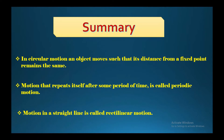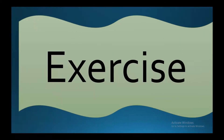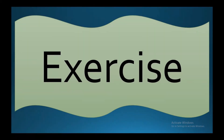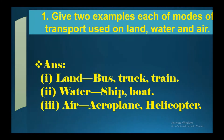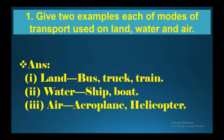In circular motion, an object moves such that its distance from a fixed point remains the same. Motion that repeats itself after some period of time is called periodic motion. Motion in a straight line is called rectilinear motion.